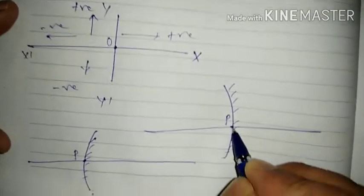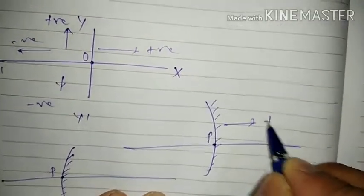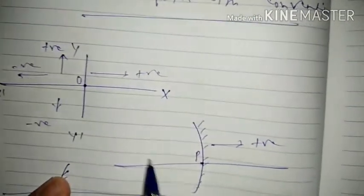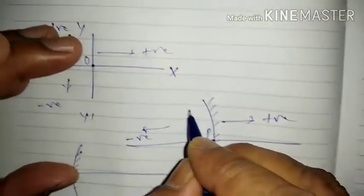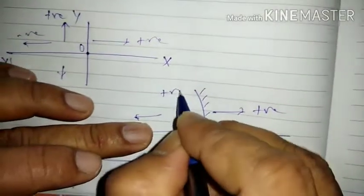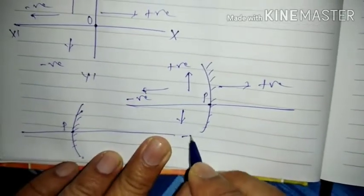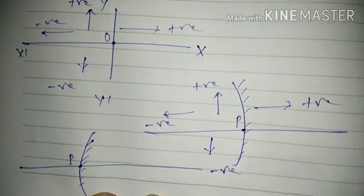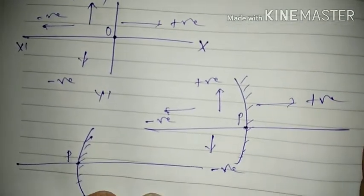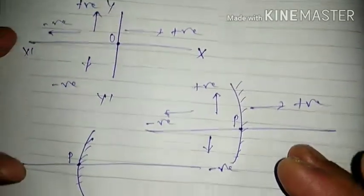Similarly, for a spherical mirror: distances measured to the right of the pole are always positive; distances measured to the left of the pole parallel to the principal axis are negative; distances measured perpendicular and above the principal axis are positive; and distances measured perpendicular and below the principal axis are taken as negative. This information plays a vital role when solving numerical problems.